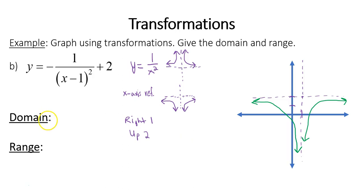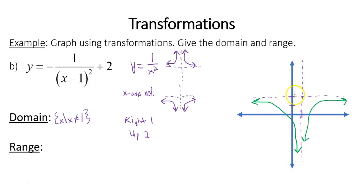To find the domain: the function is defined everywhere to the left and right of the vertical asymptote, but not defined at x equals 1. So the domain is x such that x cannot equal 1 — that's the value that causes the denominator to be 0. The range: the function is only defined below the horizontal asymptote, for y values strictly less than positive 2. So the range is y such that y is less than positive 2. That's another graphing using transformations example with domain and range in set-builder notation.